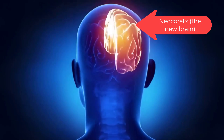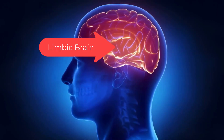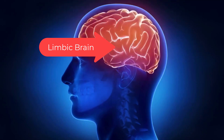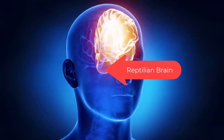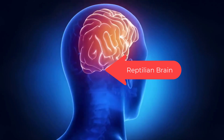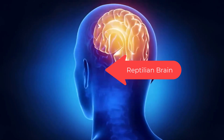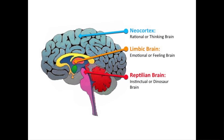The new brain, the neocortex, thinks and processes rational data. The middle brain, the limbic brain, feels emotions and is our instinct for fight or flight response. The old brain, the reptilian brain, decides. It can take into account input from the other brains, but it can also decide faster than the blink of an eye, then use the other brains to justify the decision. The reptilian brain is visual and hardwired into the brain stem.